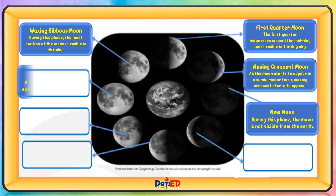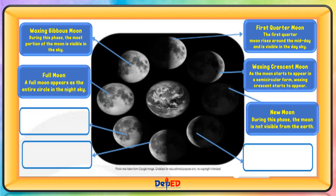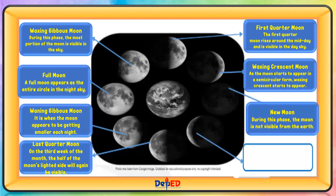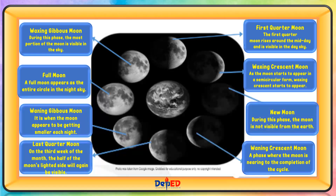Full Moon — a full moon appears as the entire circle in the night sky. Waning Gibbous Moon — it is when the moon appears to be getting smaller each night. Last Quarter Moon — on the third week of the month, the half of the moon's lighted side will again be visible. Waning Crescent Moon — a phase where the moon is nearing the completion of the cycle.